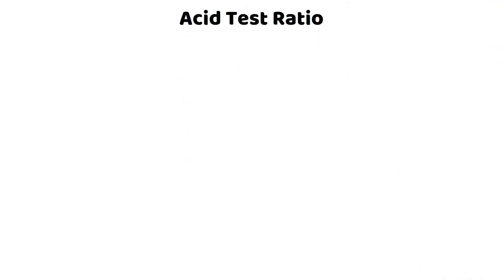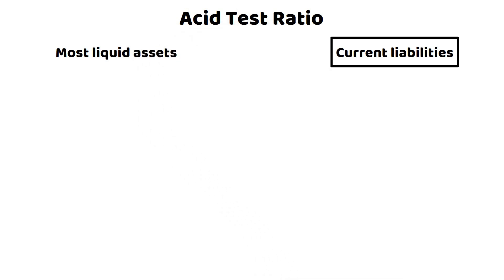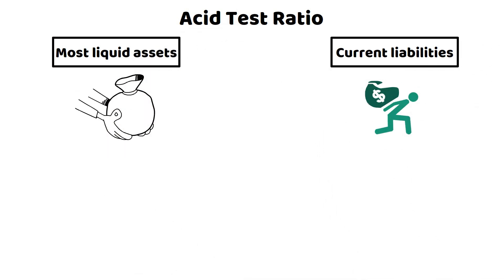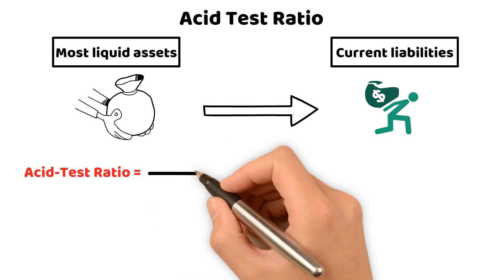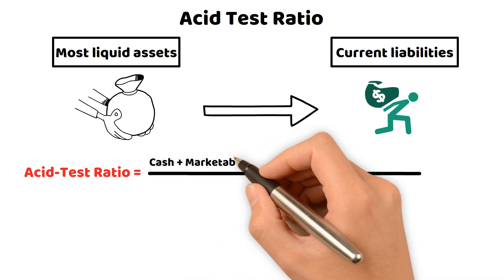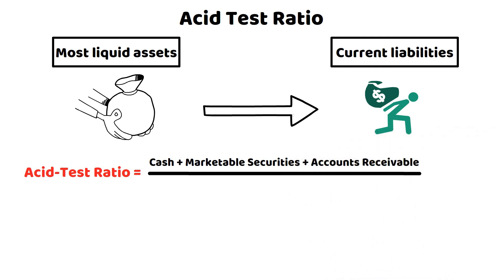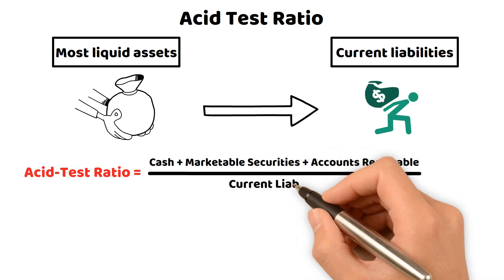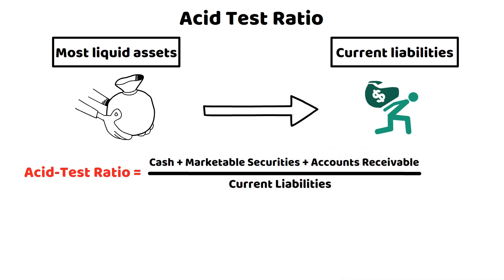The asset test ratio, also known as the quick ratio, is a financial ratio that measures a company's ability to pay its current liabilities using its most liquid assets. The ratio is a more stringent test of liquidity than the current ratio, as it excludes inventory and other assets that may be difficult to convert to cash quickly in an emergency. To calculate the asset test ratio, divide the sum of a company's cash, marketable securities, and accounts receivable by its current liabilities.